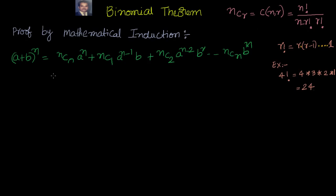Hi, welcome. In the last video we saw binomial expansion by intuition. In this video we will see how to prove it by mathematical induction. Mathematical induction involves three steps: the first step is to prove it true for n equal to 1, the next step is assuming it is true for n equal to k, and the next step is to prove for n equal to k plus 1. If LHS equals RHS, we have proven that the expansion is correct.